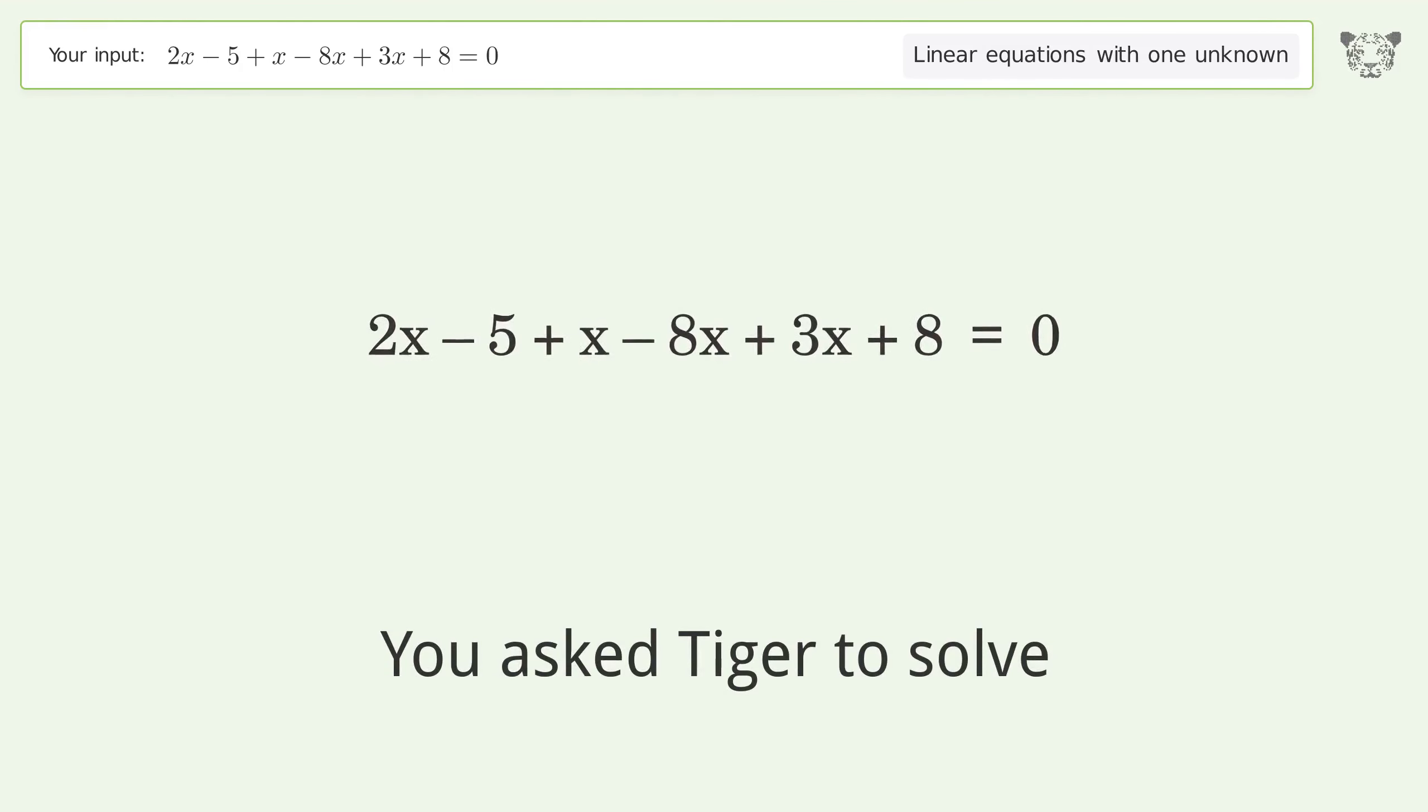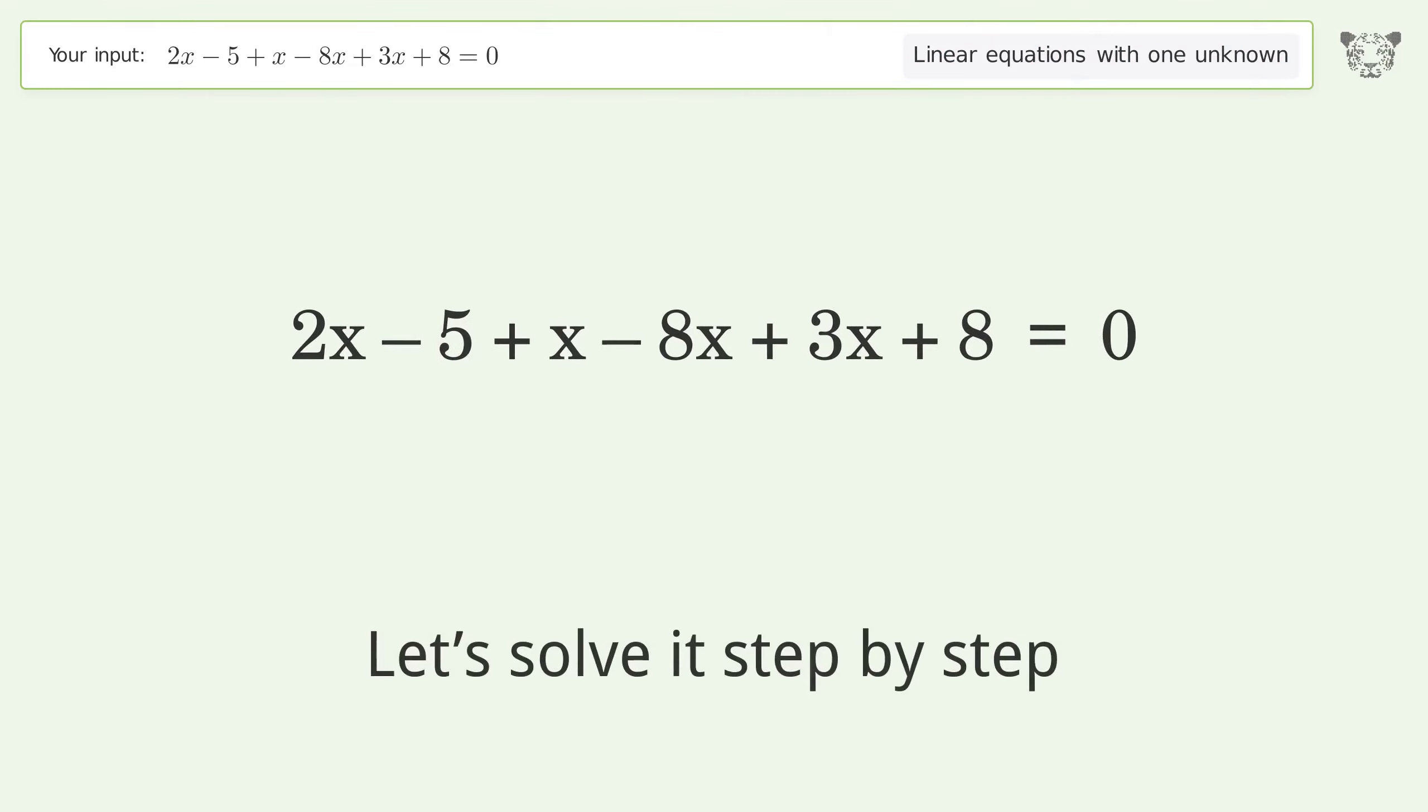You asked Tiger to solve this. This deals with linear equations with one unknown. The final result is x equals 3 over 2. Let's solve it step by step. Simplify the expression.